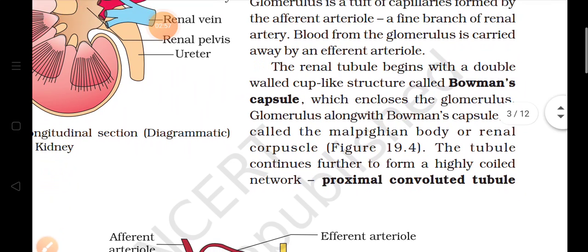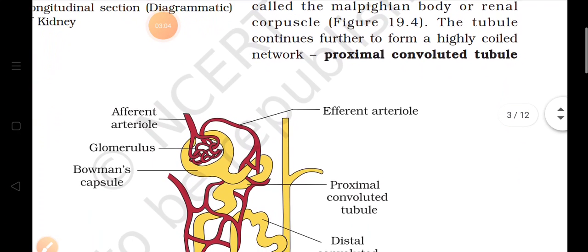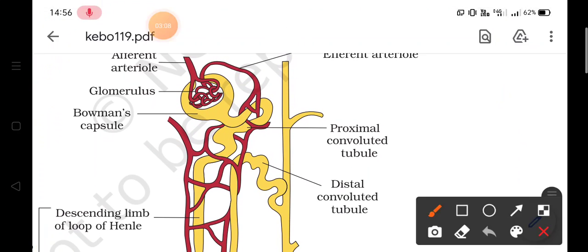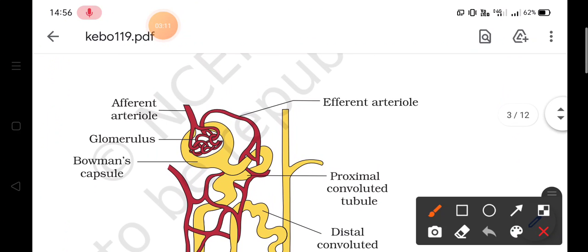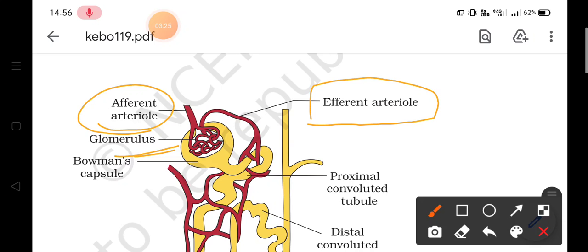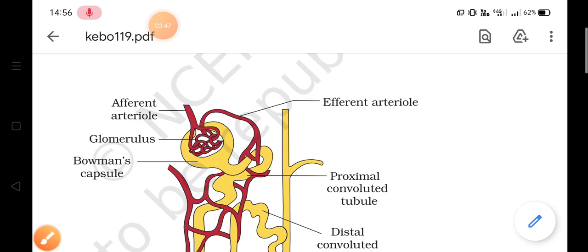The tubule continues further and forms a coiled network called the proximal convoluted tubule (PCT). As seen in the diagram, the nephron has an afferent arteriole bringing unfiltered blood, which is filtered by the glomerulus and carried back into the body by the efferent arteriole. The tubule has two parts: one is the proximal convoluted tubule (PCT) and the other is the distal convoluted tubule (DCT).